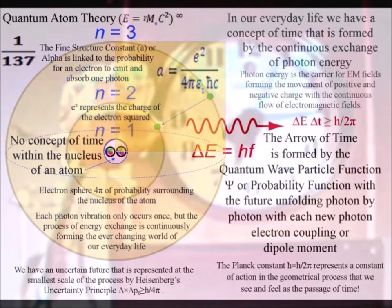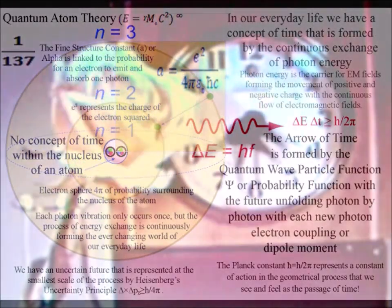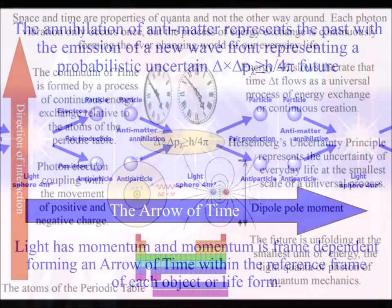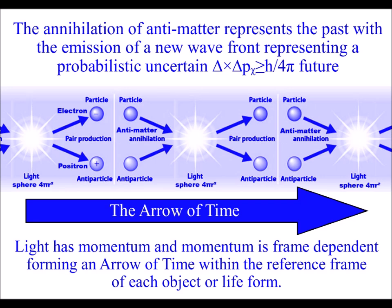In this theory, with each photon-electron interaction or oscillation, a potential future is emitted as a wave of probability with the past being annihilated in the form of antimatter annihilation.